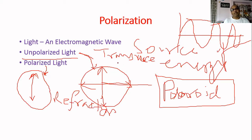Unpolarized light — when particles are vibrating in all directions — generally occurs in broad daylight, or from bulbs, tube lights, torch lights, emergency lights, candles, or lamps. Polarized light is when those particles are vibrating only in one direction. Our requirement is for polarized light. That is called polarization.